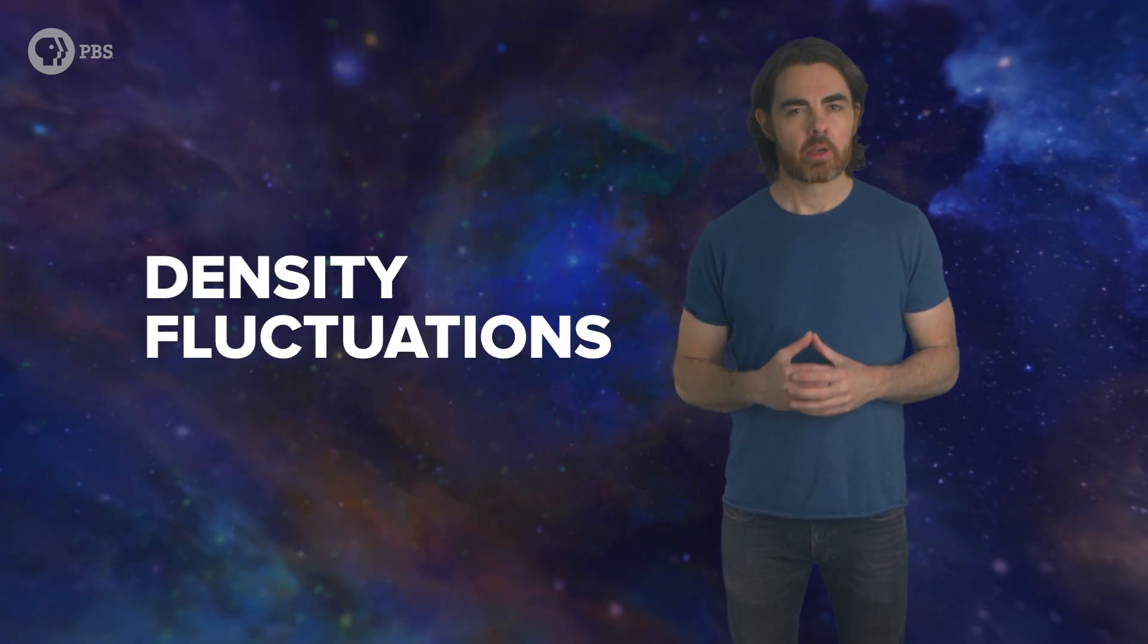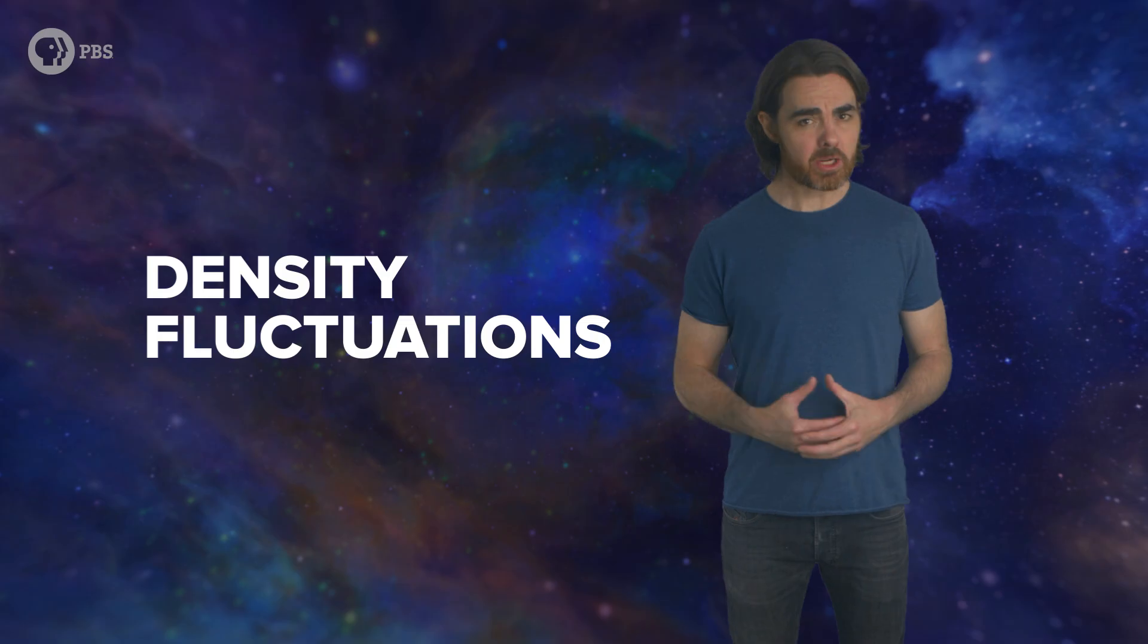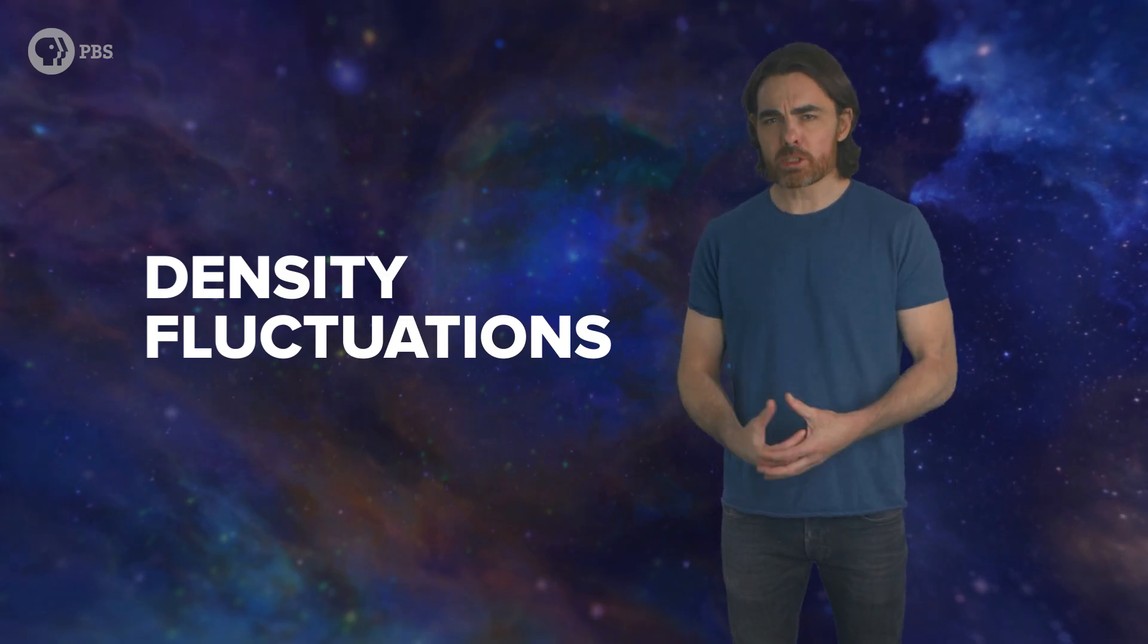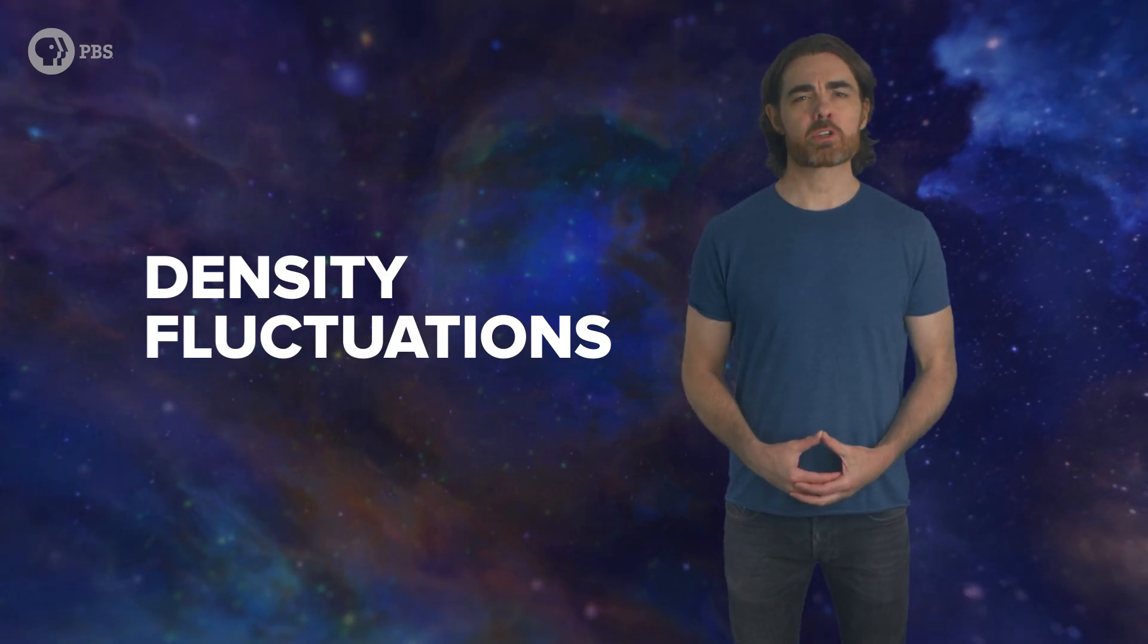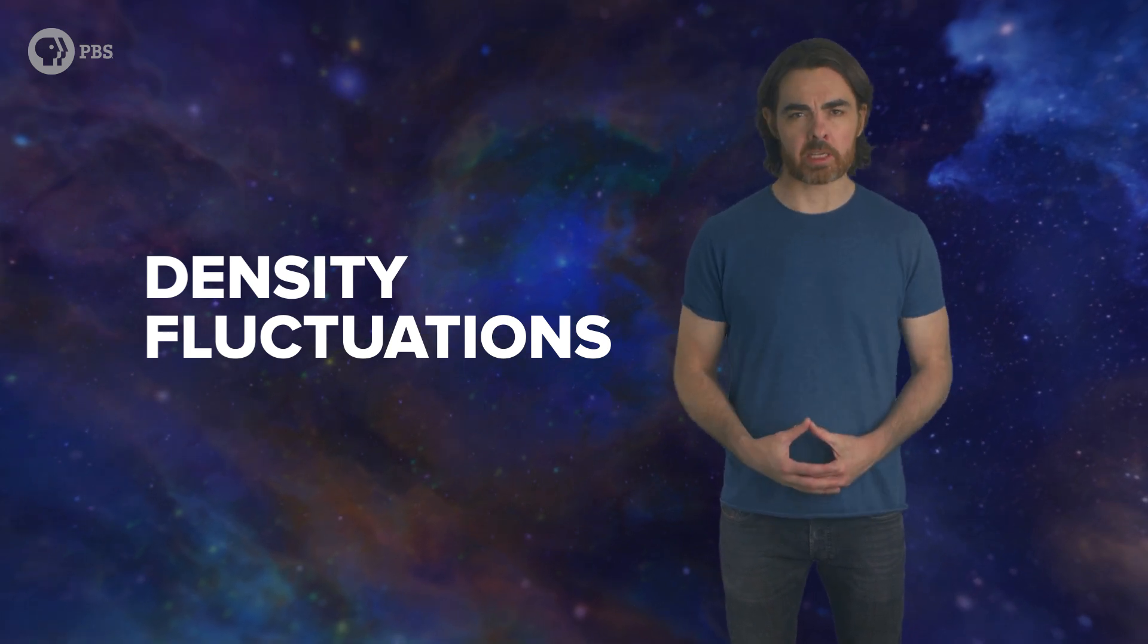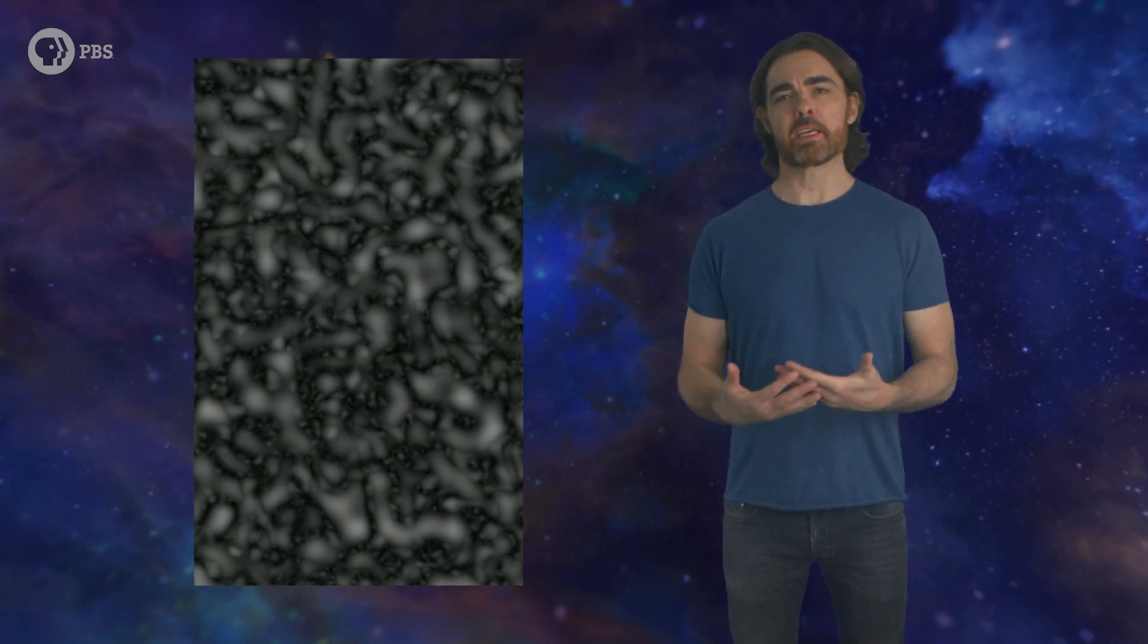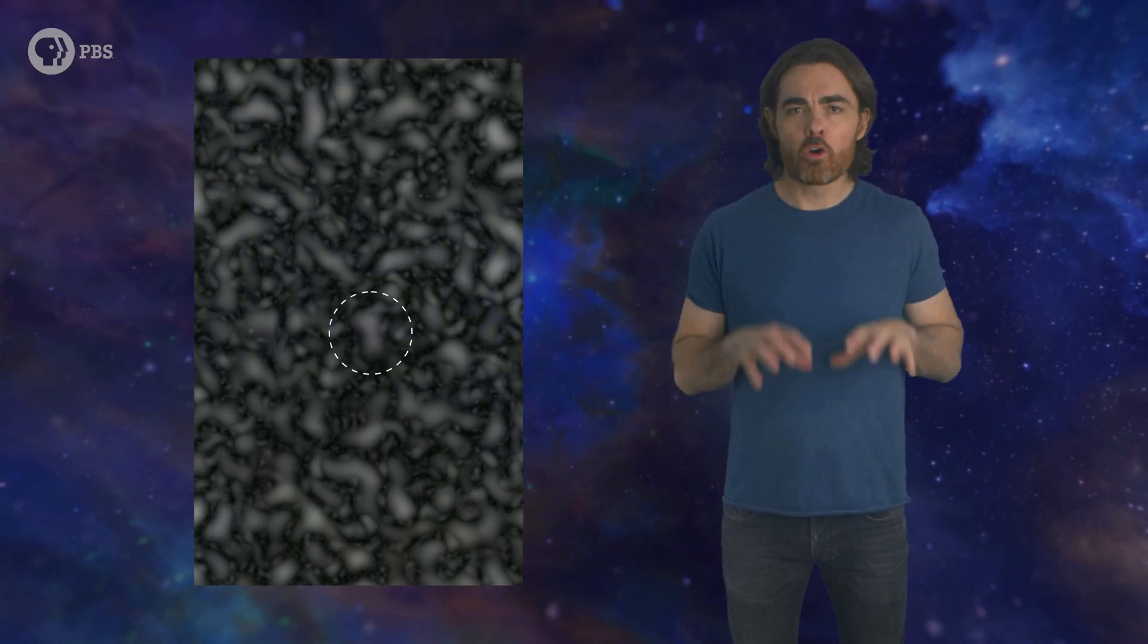Density fluctuations. A teensy bit more matter here, a teensy bit less there. These fluctuations probably were the remnants of random quantum fluctuations from when the universe was subatomic in size, and they were then expanded enormously by cosmic inflation in the beginning incident of the Big Bang. Immediately after that, two competing forces began to work. Each overdense region pulled gravitationally on its surroundings, drawing matter towards it. In particular, the dark matter flowed inwards towards this density peak.